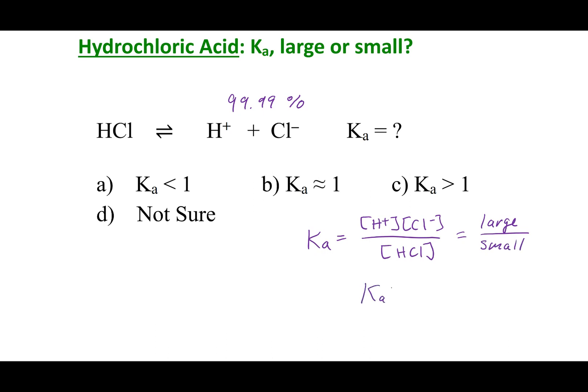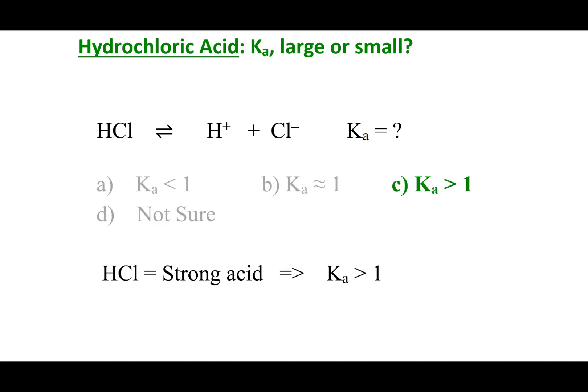And so, what that means is that Ka is going to be greater than 1. And so, this is the take-home message. If you have a strong acid or a strong electrolyte as your acid, the Ka is going to be much greater than 1.